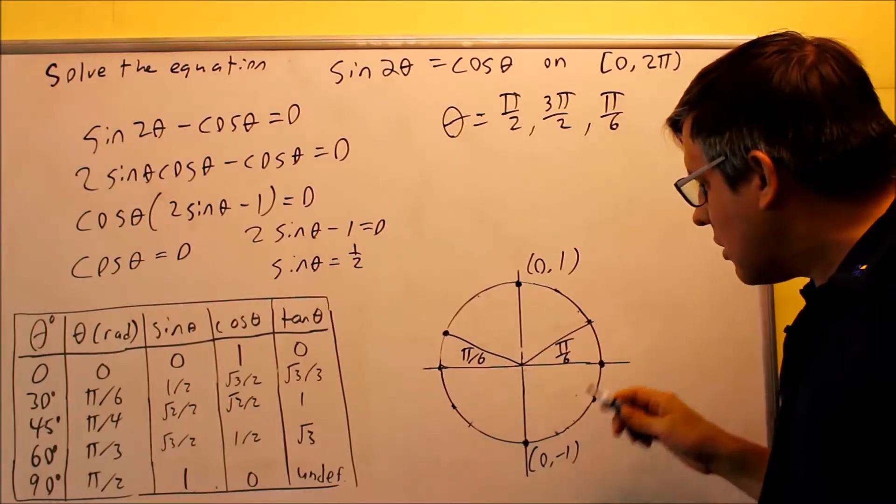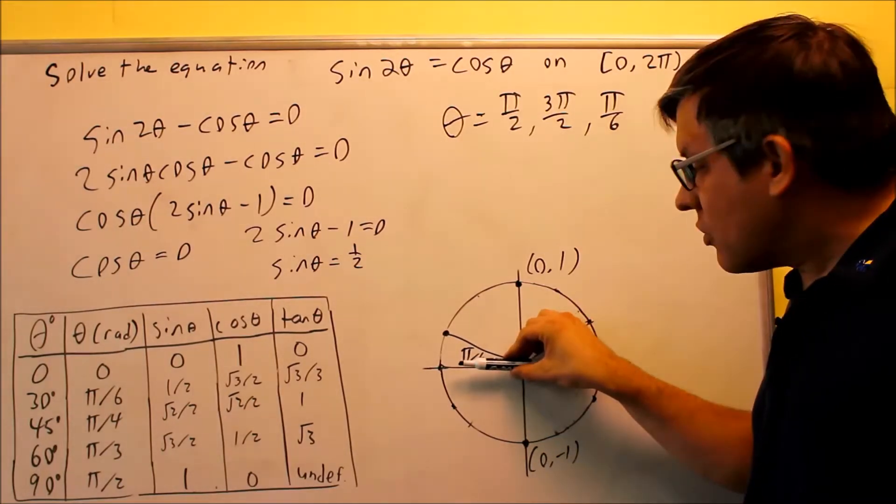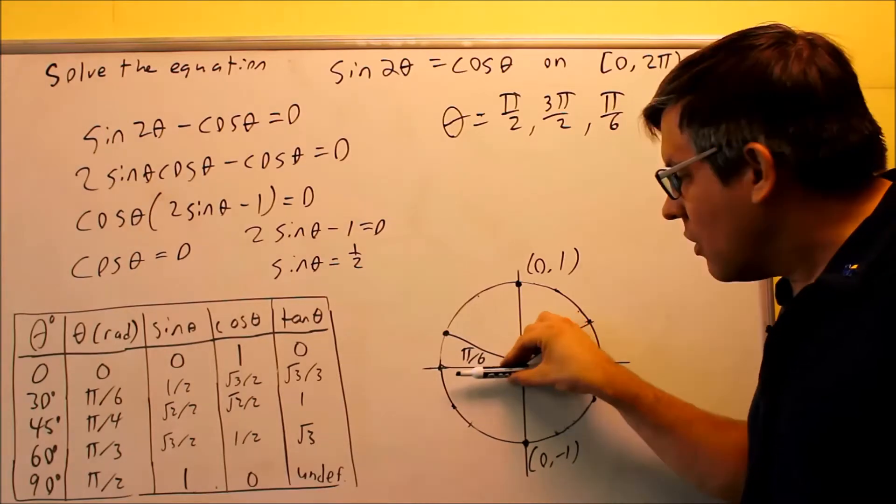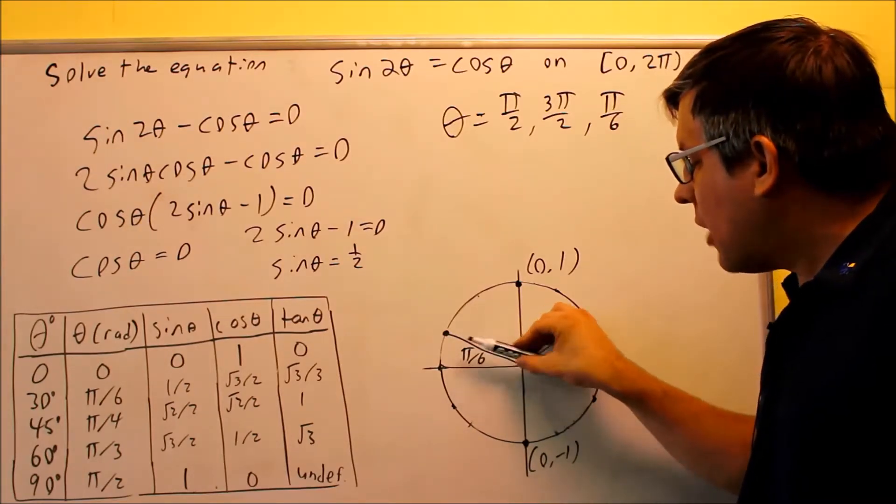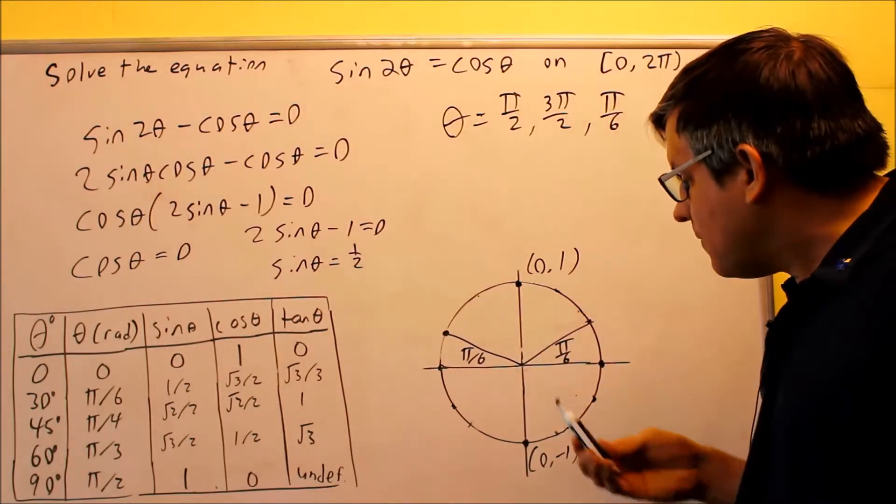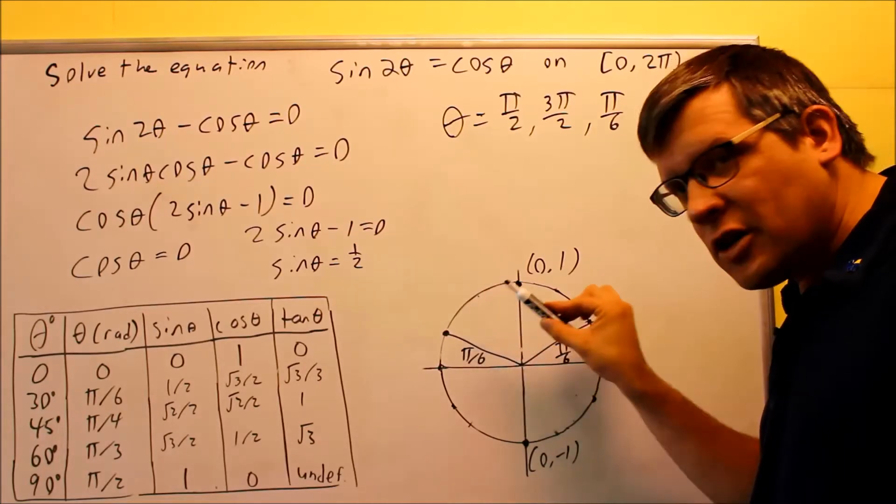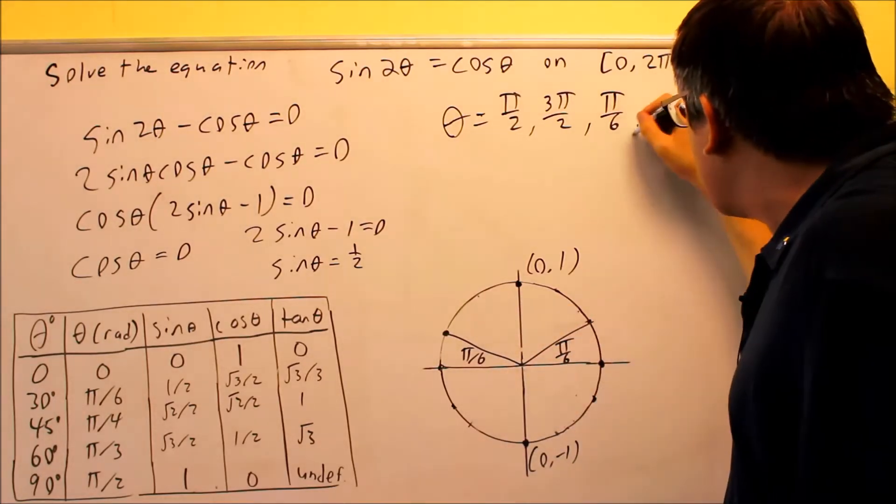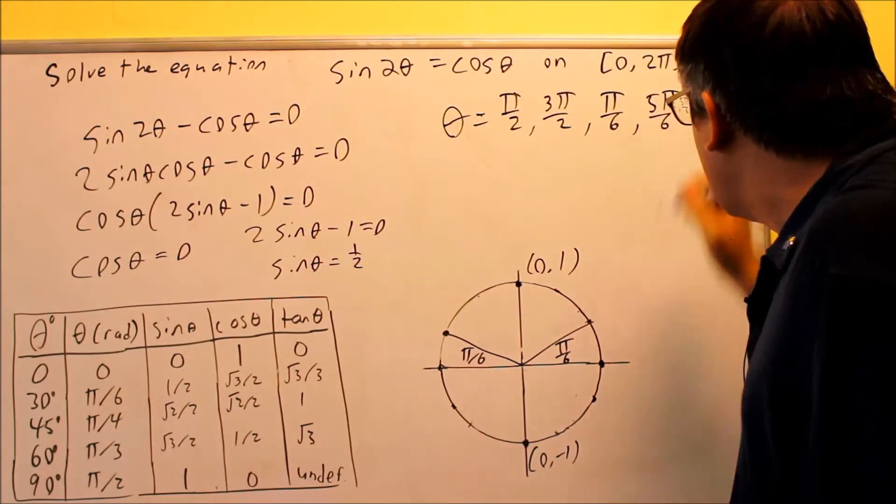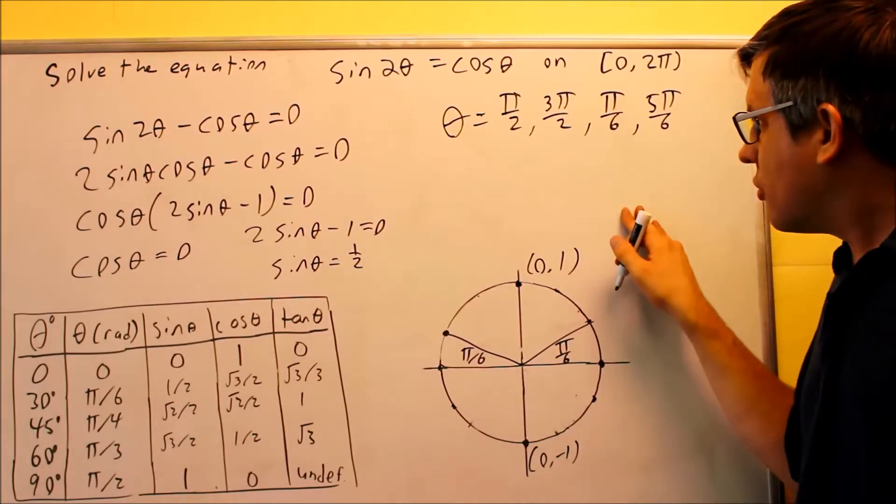Now to get that last angle, we have 180 here, and we're going to subtract. We're going to go back this way. 180 pi minus pi over 6. So if I do that, 6 pi over 6 minus pi over 6, that's going to be 5 pi over 6 when I use common denominators. So that would be our fourth solution.